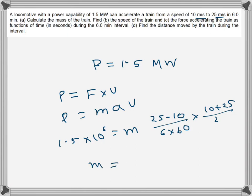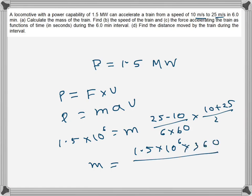Substituting into P = ma × v: 1.5 × 10⁶ = m × [(25 − 10) / 360] × 17.5. Rearranging, the numerator is 1.5 × 10⁶ × 360 and the denominator is 15 × 17.5, giving a mass of 2.1 × 10⁶ kg.